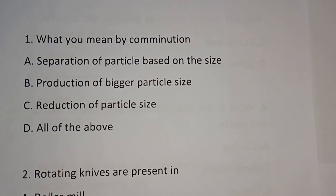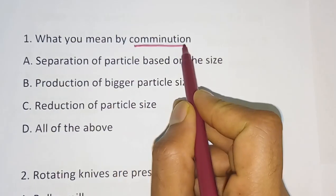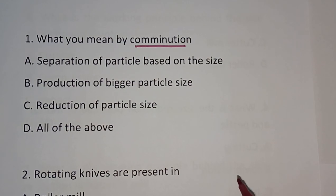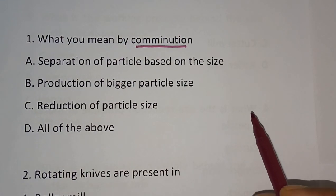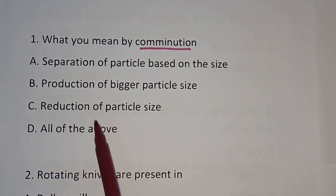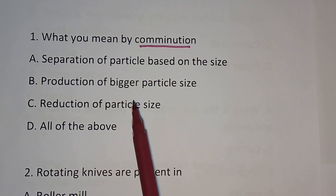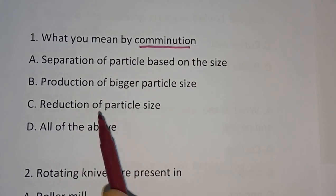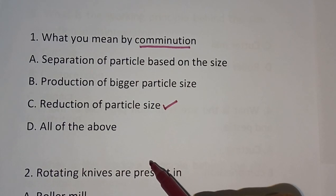The first question: What do you mean by comminution? Options are: Option A - Separation of particles based on size. Option B - Production of bigger particle size. Option C - Reduction of particle size. Option D - All of the above. Comminution is also known as size reduction, so Option C is the correct answer.